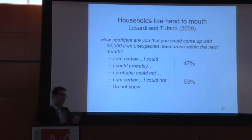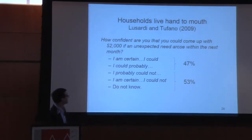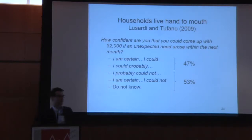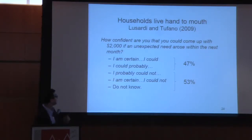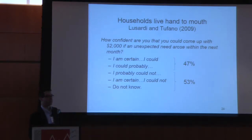Let me quickly go through some evidence. First, hand-to-mouth behavior. This remarkable survey result from Lusardi and Tufano: how confident are you that you could come up with $2,000 if an unexpected need arose within the next month? Remarkably, only 47% of US households say that they could come up with $2,000 in the next month.